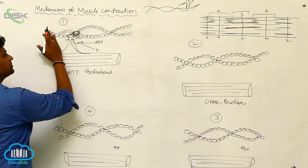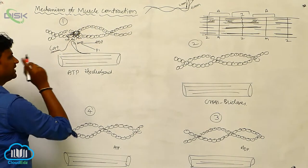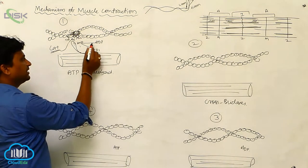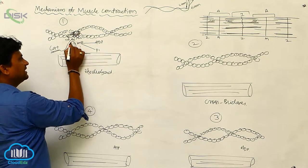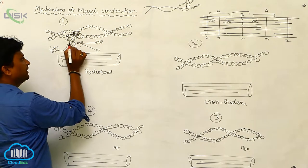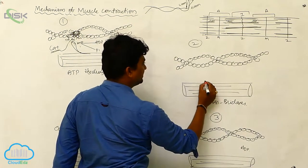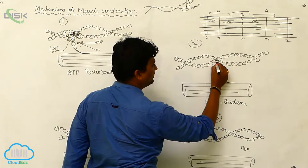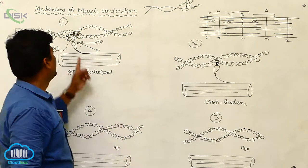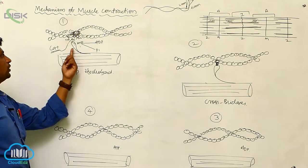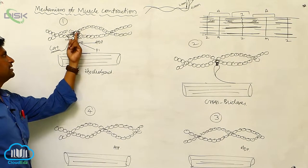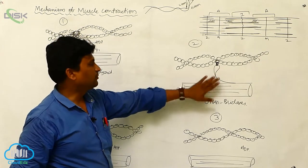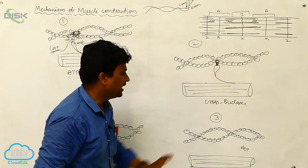Due to the conformational change, the active site on the actin filament is now open. The ATP is utilized — divided into ADP and inorganic phosphate — causing conformational changes in the myosin head. The activated myosin heads go and bind with the active center of the actin filament, and the formation of cross-bridges occurs.